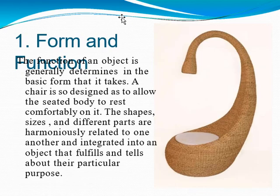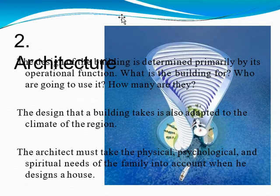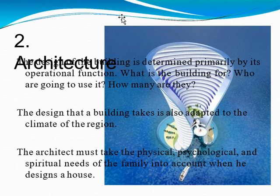So looking at different forms and functions: the function of an object is generally determined by the basic form it takes. A chair is designed to allow the seated body to rest comfortably — its shape, size, and parts are harmoniously integrated to fulfill its particular purpose. We also have architecture, which is determined primarily by its operational function. What is the building for? Who is going to use it? How many are they? The design is also adapted to the climate of the region. The architect must take the physical, psychological, and spiritual needs of the family into account when designing a house.